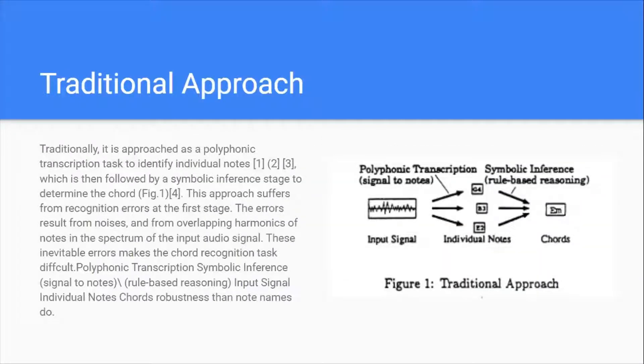The traditional approach is polyphonic transcription. Polyphonic means multiple sounds together, whereas monophonic is individual notes. This polyphonic transcription task identifies individual notes which is then followed by symbolic inference to determine the chord. The input signal will identify individual notes and then predict the chord. However, errors result from noises and from overlapping harmonics of notes in the spectrum of audio signals.